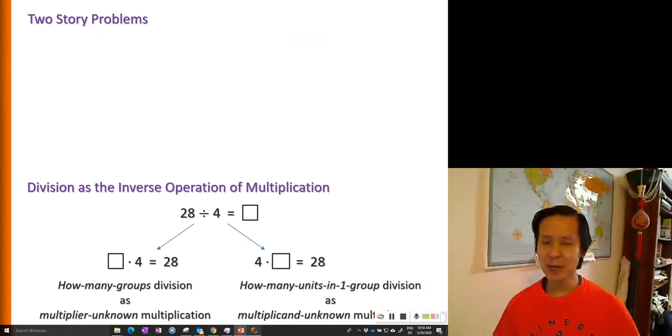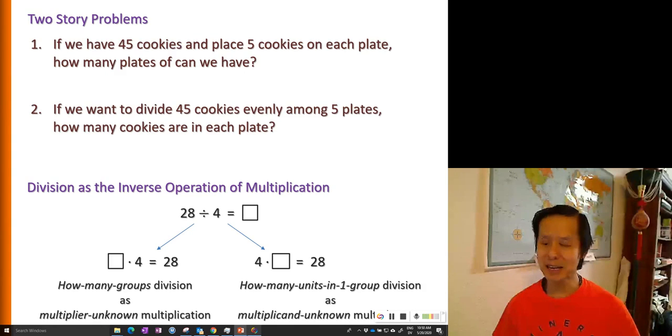So let's take a look at two story problems and you decide whether the first problem is the how many groups type of division or how many units in one group type of division. Problem one is how many groups division, because we know there are five cookies on each plate. That means we know the multiplicand. So we are actually looking for the missing multiplier. Hence, in terms of multiplication, the division is a question mark times five equals 45.